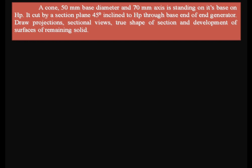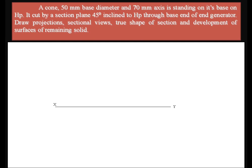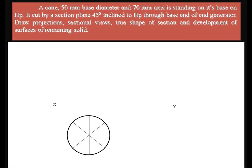First, draw the XY reference line. With the solid resting on the horizontal plane, in the top view we can see the base — that is, the circle of the cone. Set the compass to 50 mm diameter (25 mm radius), select a center point below the XY reference line, and draw the circle. Then locate the center point and divide the circle into eight equal parts. These eight equal parts help represent the sectional view — the cut shape of the solid.